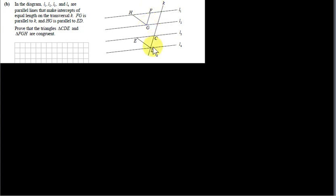FG is parallel to K, and HG is parallel to ED. Prove that the triangles CDE and FGH are congruent. So we're given that FG is parallel to this line K here, and HG is parallel to DE.